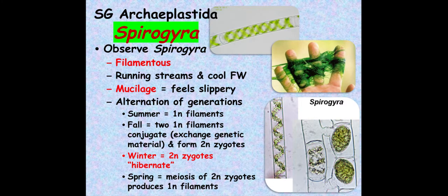Still in Archaeplastidia, let's move to Spirogyra, which is a filamentous green algae. That basically means cells are stacked on top of each other in a long, thin, filament-looking structure — it's stringy. We find Spirogyra in freshwater, like running streams, cooler water, mountain stream kind of areas.